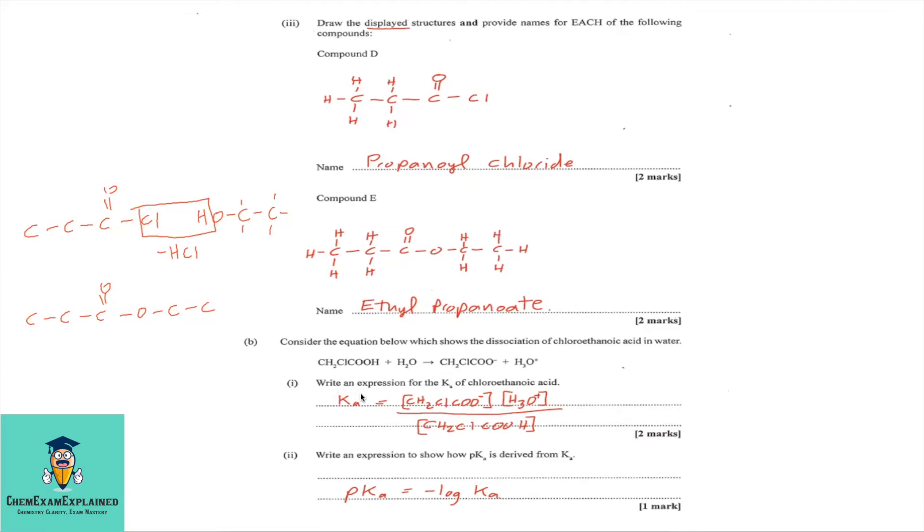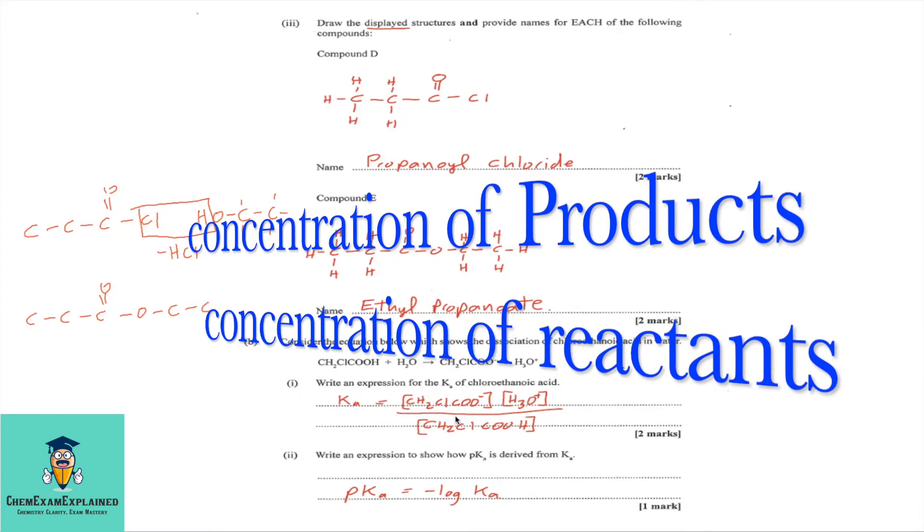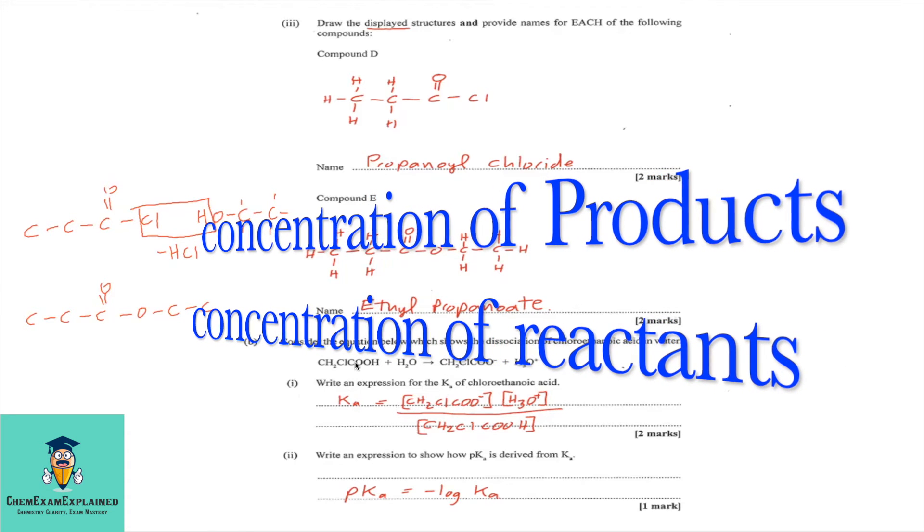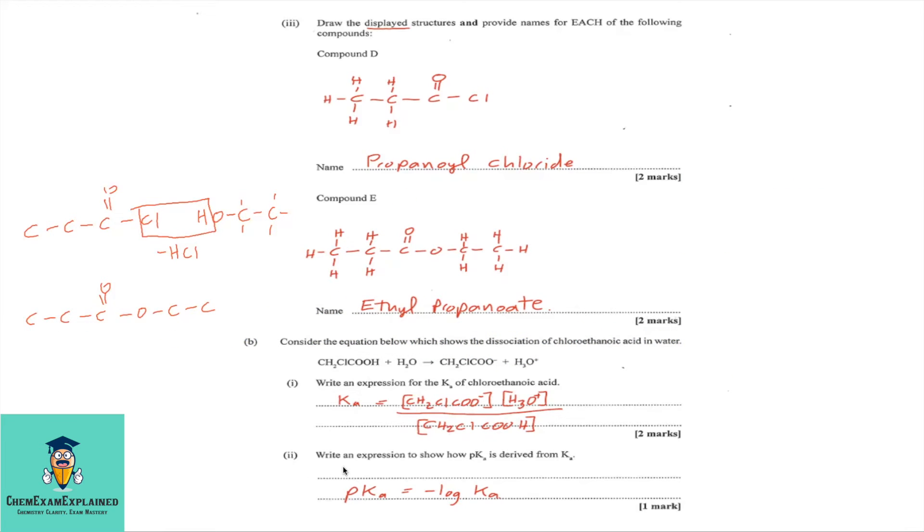Part 1. Write an expression for the Ka of chloroethanoic acid. So, the Ka expression or equation is simply writing the product of the product over the product of the reactant without including water in this equation. Part 2. Write the expression to show how pKa is derived from Ka. So, the expression to show how pKa is derived from Ka is pKa equal minus log base 10 Ka.